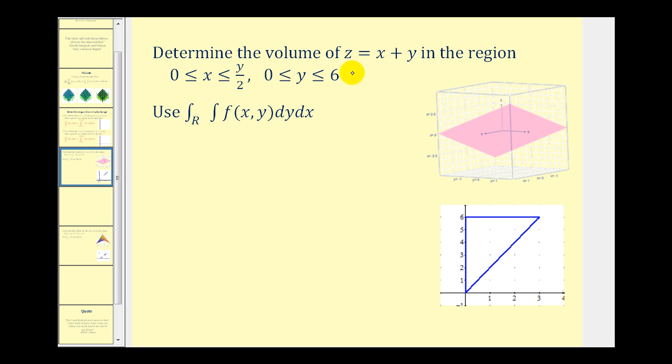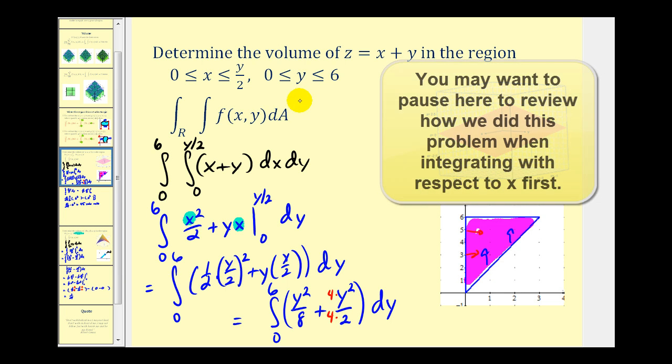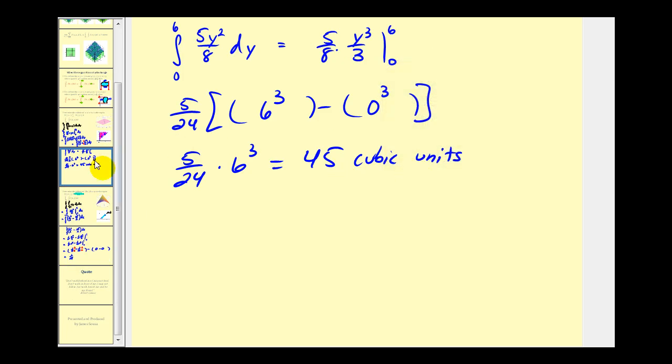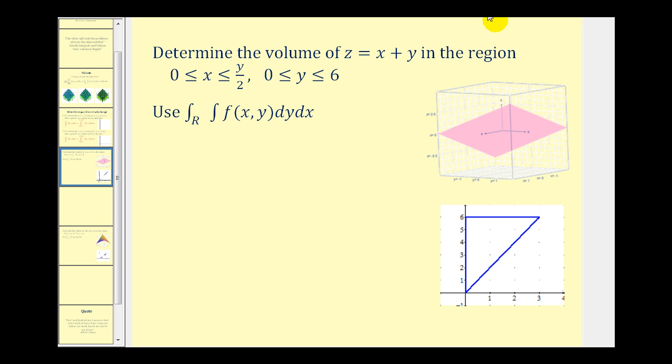For this first example our function is z equals x plus y and the region is defined on the closed interval for x from 0 to y over 2 and for y on the closed interval from 0 to 6. We already solved this integrating with respect to x first and then y, and the answer was 45 cubic units. Now I want to integrate this function with respect to y first and then x.